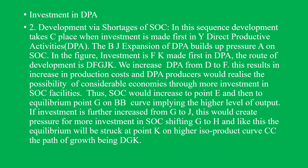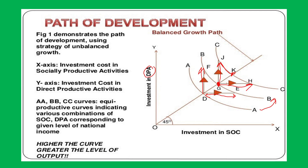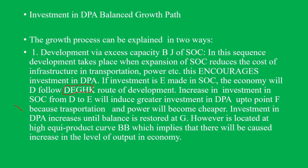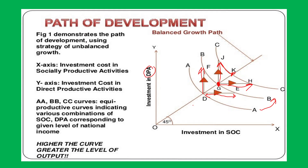Development also takes place when investment is made first in directly productive activities. The investment FK is made first in DPA. The root of development path in this case is D, F, G, J, K.